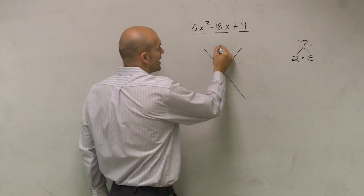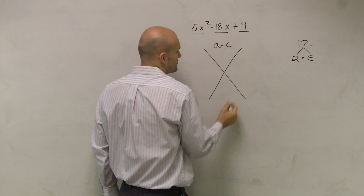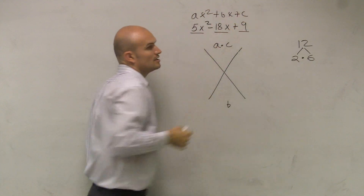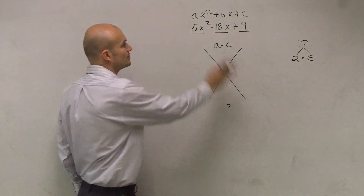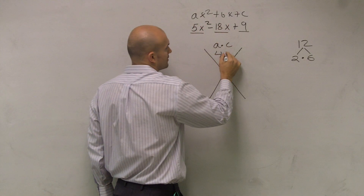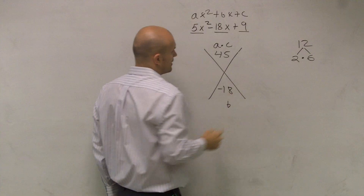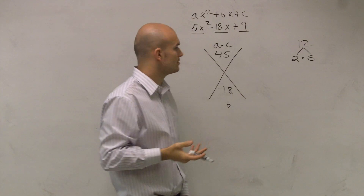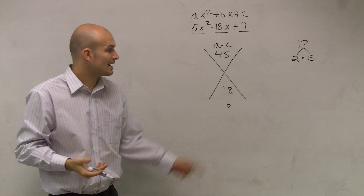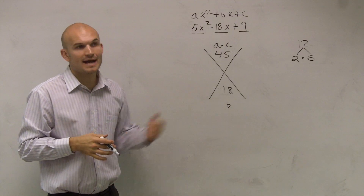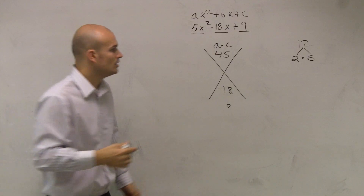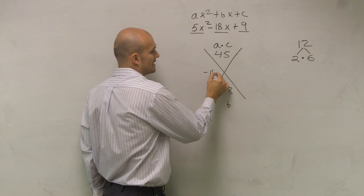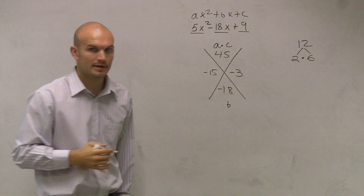So we're going to use a method — the X method — to help us figure out how we can rewrite it as a product. We do a times c on top and b on the bottom, where the expression is ax² + bx + c. So a is our coefficient of the x² term. I do 5 times 9, which is 45, and then I get negative 18. So I need to find two numbers that multiply to give me positive 45 but add up to give me negative 18 — that's negative 15 and negative 3.